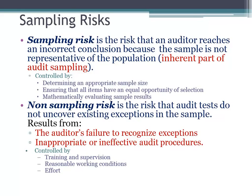When we talked about assertions and completeness, and the importance of having pre-numbered documents — this is one of the reasons. You want to be able to reconcile that if there were 1,000 sales transactions in the year, you can account for all of the sales orders from 1 to 1,000, so that your population includes all of the sales transactions that occurred. So you're going to look at numerical sequence.